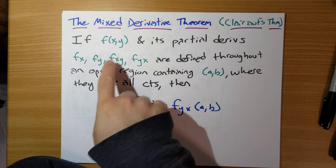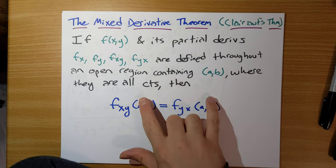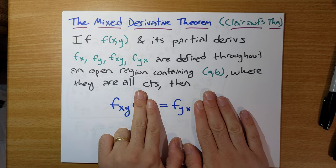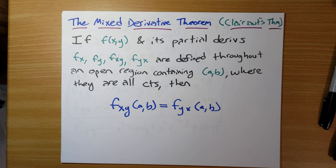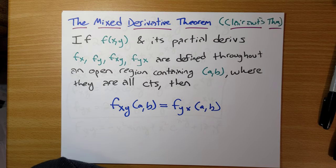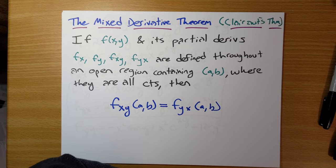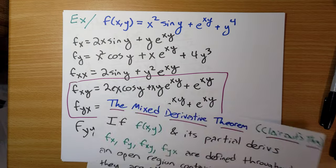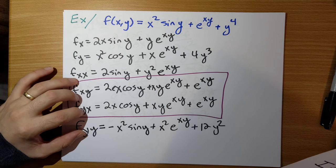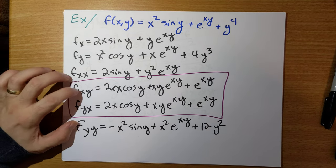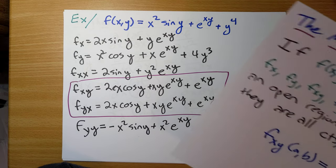More generally, if all the partial derivatives are continuous everywhere you care about, then these two are always going to equal each other. Everything is nice most of the time, and they will equal each other. This allows certain simplifications later on. Planning ahead to section 14.7: normally you would want to calculate all four second-order partial derivatives, but you only have to calculate three of them because f_xy and f_yx are equal to each other.